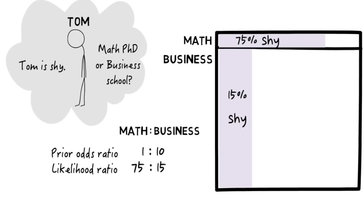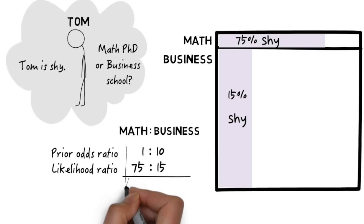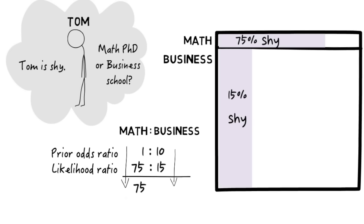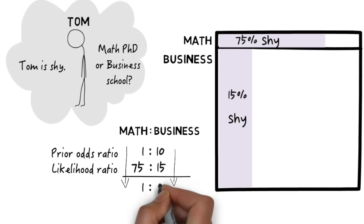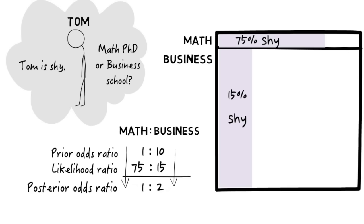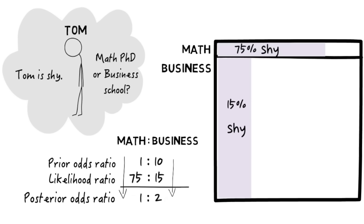You can see how the math shakes out. We multiply two linear ratios: the ratio of math to business students, which is 1 to 10, times the ratio of shyness in math versus shyness in business, which is 75 to 15. Multiplying those two linear ratios gives us a ratio of areas which comes out to about 1 to 2. So it's roughly twice as likely for Tom to be in the business program, even though shyness is more common among math students. This is the mechanics of Bayes' rule.